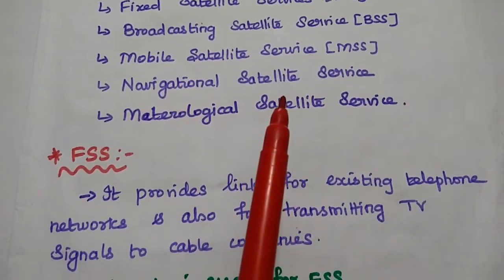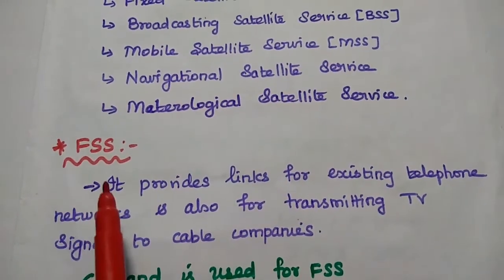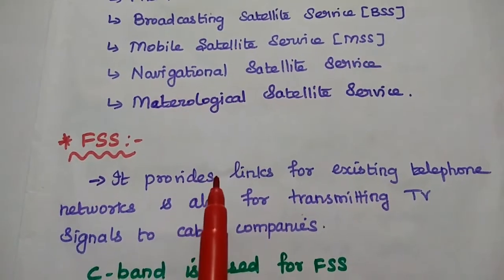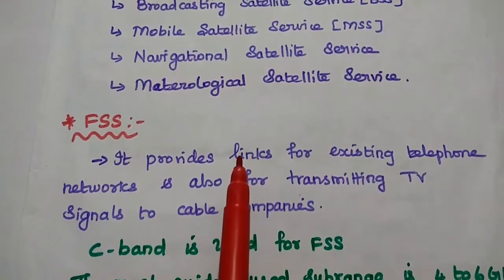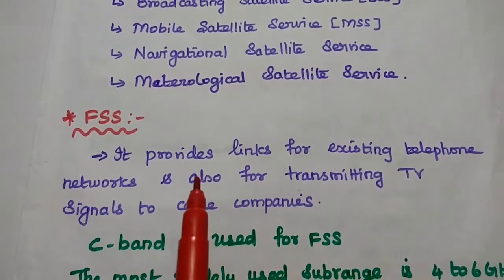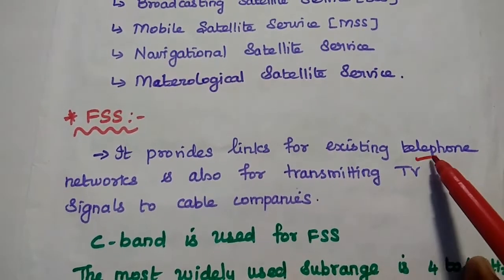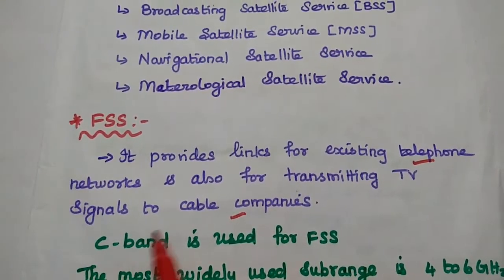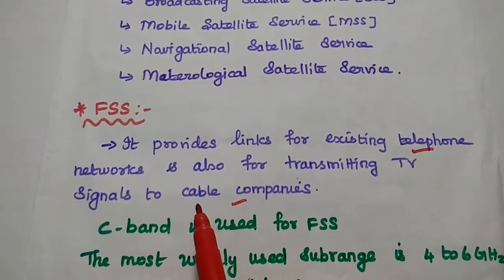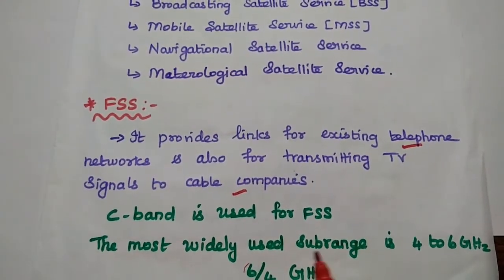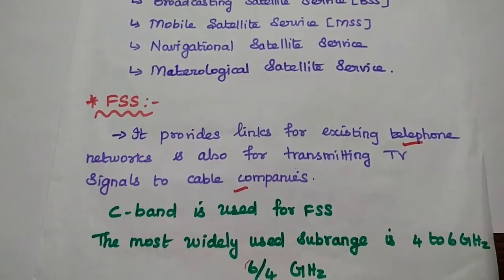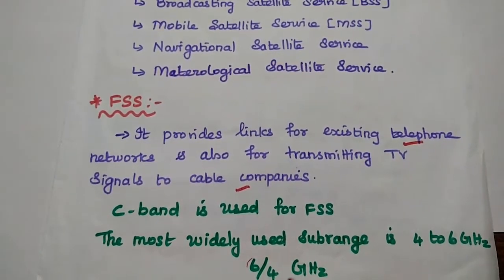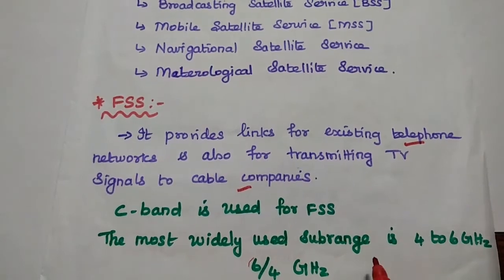The first one is Fixed Satellite Service. It is mainly used to provide the link for existing telephone systems and also for cable networks — mainly for telephone and cable companies. C band is used for this Fixed Satellite Service. The sub-range is 4 to 6 gigahertz, that is 6/4 gigahertz, where 6 is the uplink frequency and 4 is the downlink frequency.